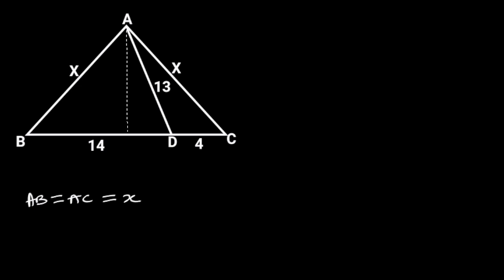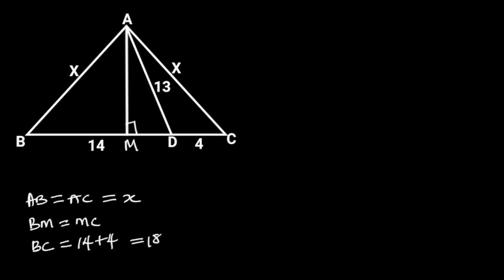Next, let's draw a perpendicular line from point A to line BC. Let this point be M. Since triangle ABC is an isosceles triangle, it follows that BM is equal to MC. Since BC is equal to 14 plus 4, which is equal to 18, it follows that BM, which is equal to MC, is equal to 18 divided by 2, which is equal to 9.